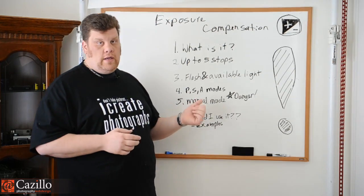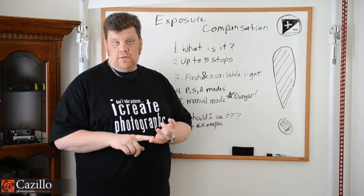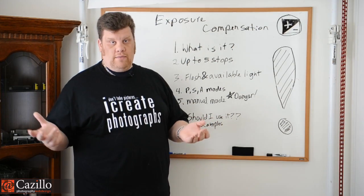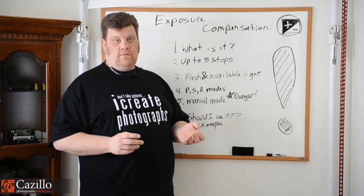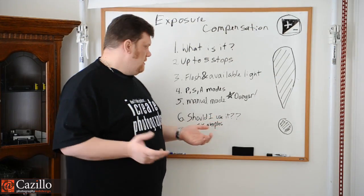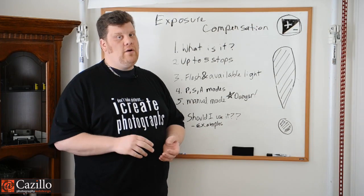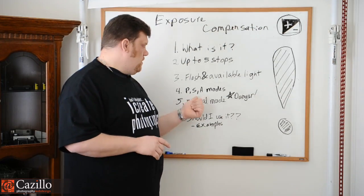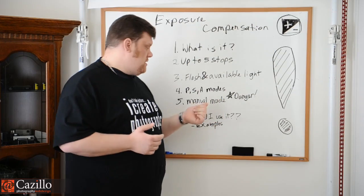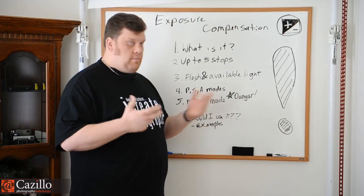In program mode, it's going to randomly choose either your aperture or your shutter to adjust and increase or decrease your exposure. I haven't used program mode in probably 10 or 15 years, so I don't know exactly how it works. In shutter priority, it'll increase or decrease your aperture depending on which way you dial it. In aperture priority mode, it'll then increase or decrease your shutter.